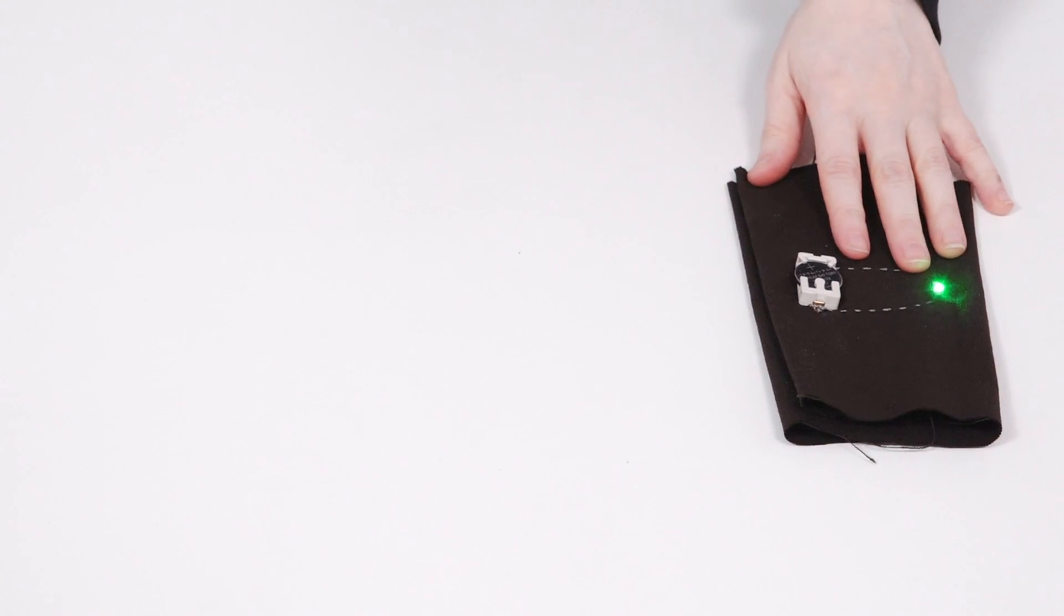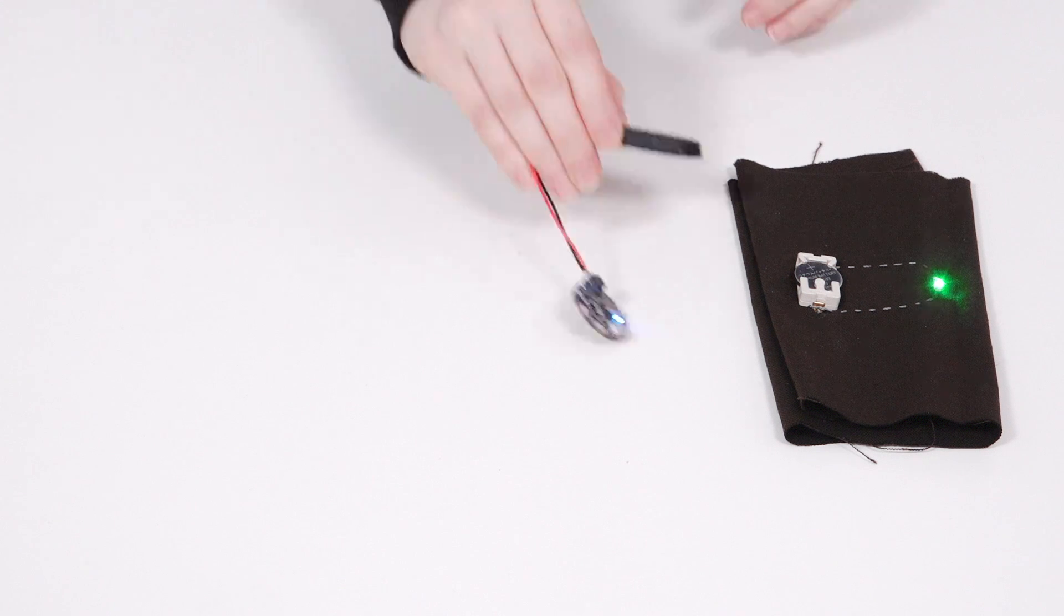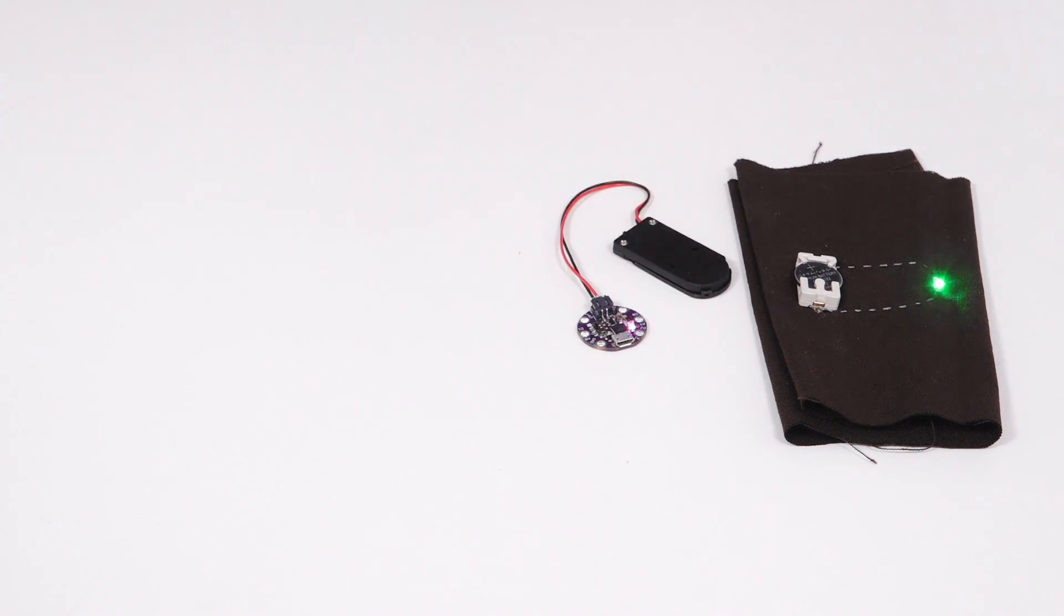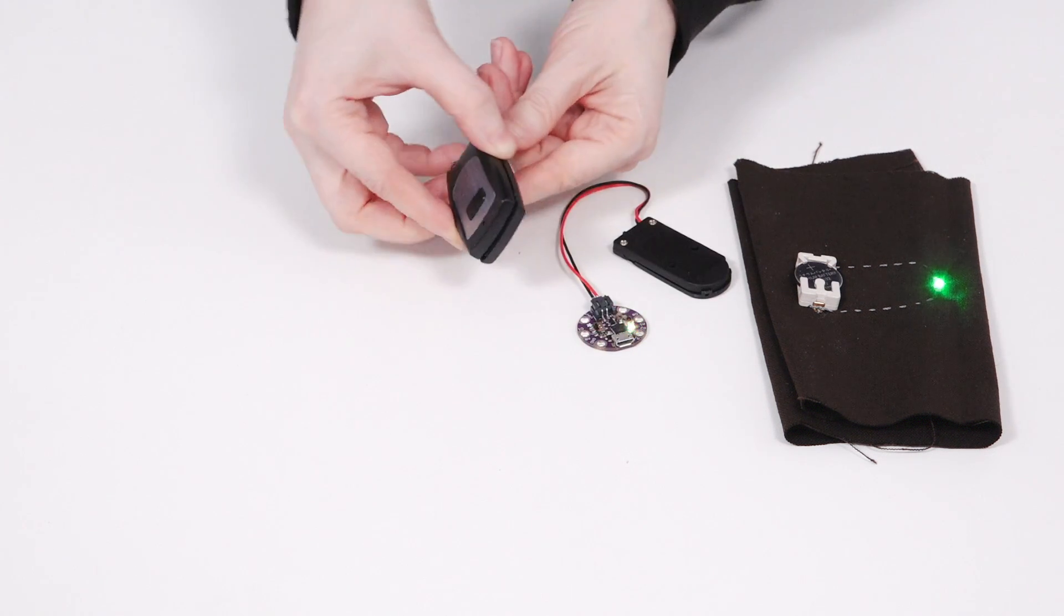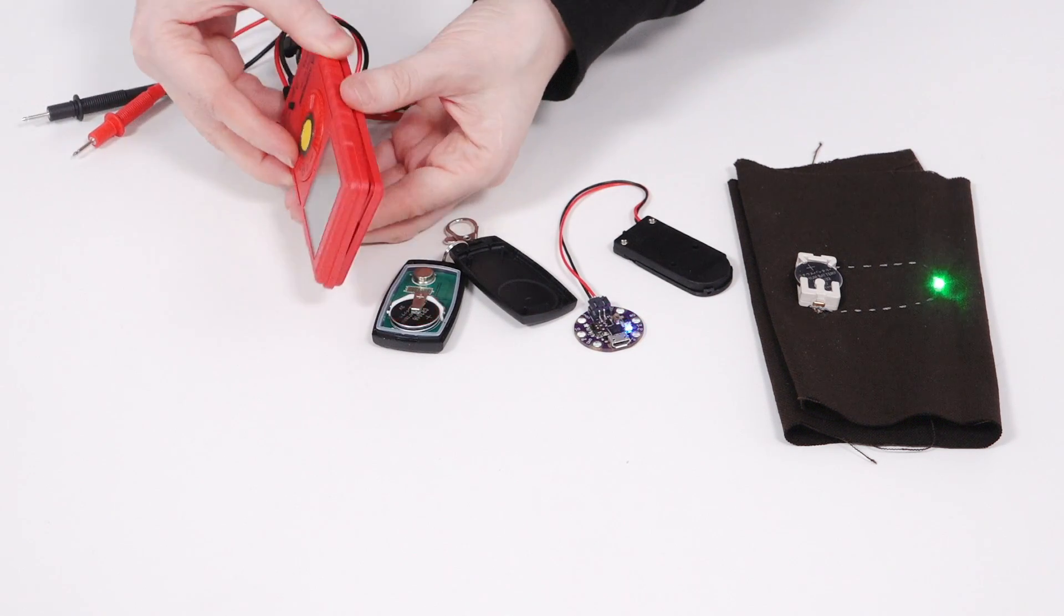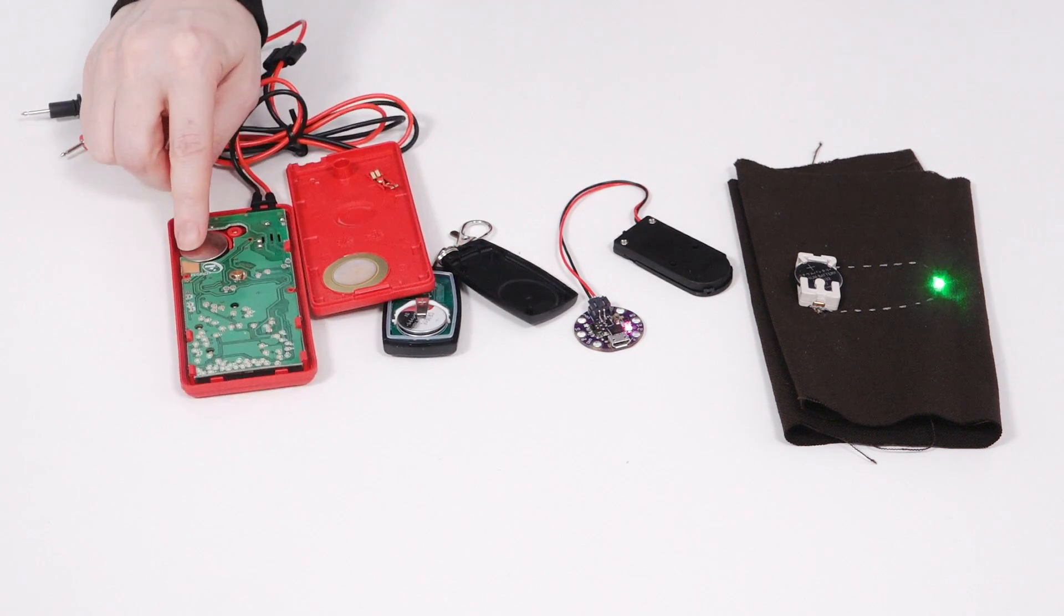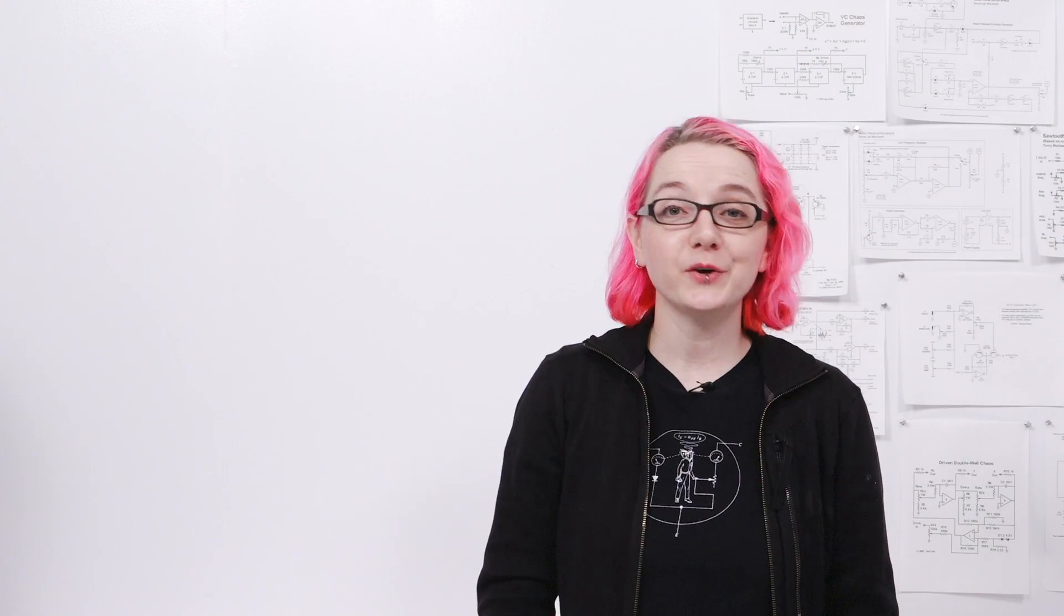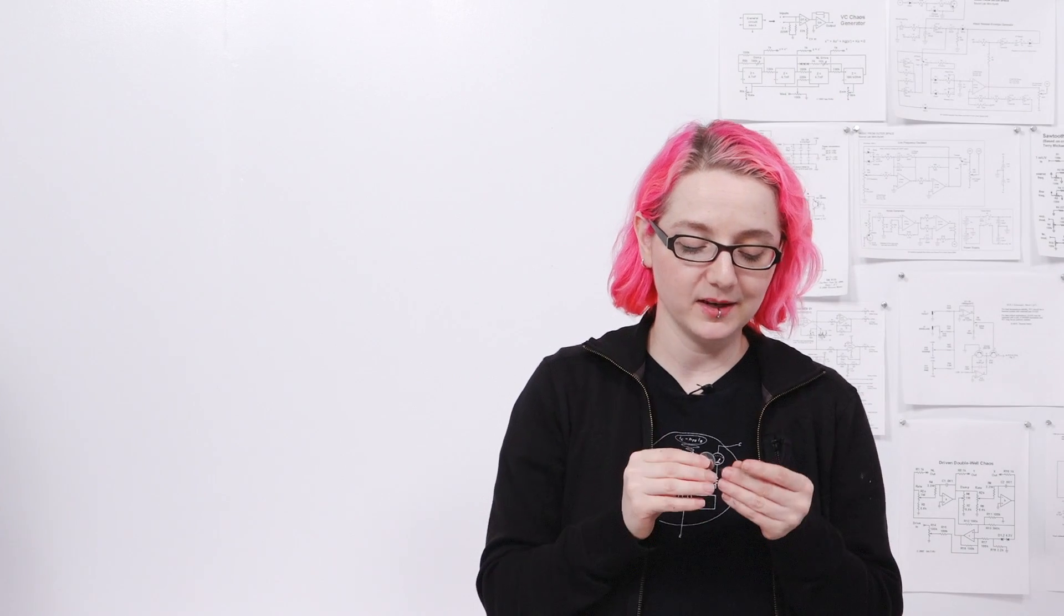Coin cells are ideal for portable and low power electronic projects like sewable wearable electronics, small development boards like this Adafruit Gemma, RF remotes. This one runs off of two coin cells. You can even use it to power a multimeter like this one. Another handy trick you can do with coin cells is they make for really good LED testers.